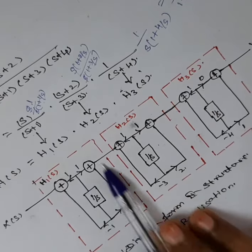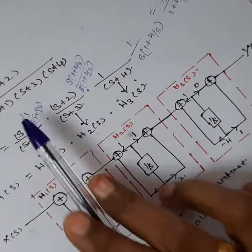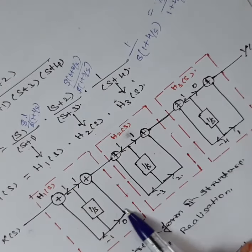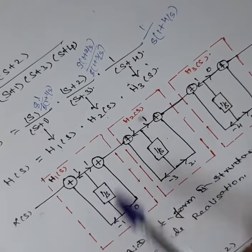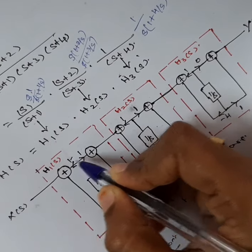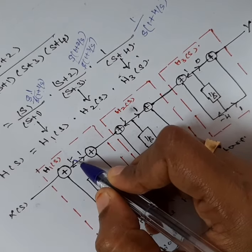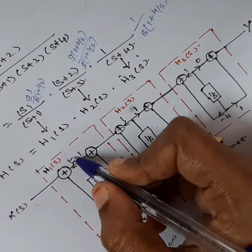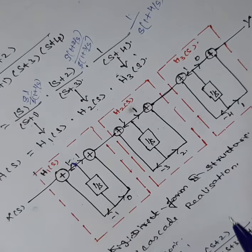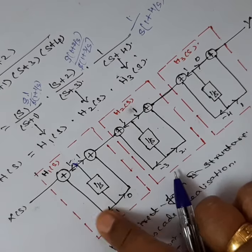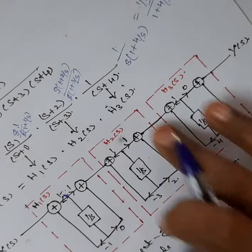While drawing Direct Form 2, the numerator value is drawn on one side and denominator on the other. For H1(s), the numerator value is 1 and the 1/s term coefficient is 0. For the denominator (1 + 1/s), since the direction is opposite, you denote it as minus 1. The coefficient of 1/s in the denominator is 1, so you put minus 1.